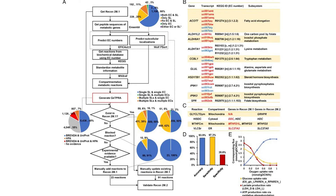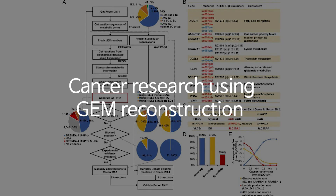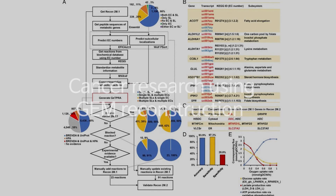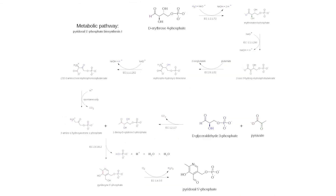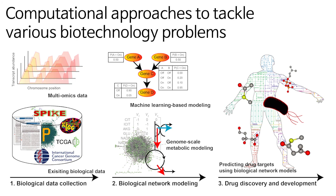The third topic is cancer research using GEM reconstruction. Using the transcriptome or proteome data of cancer cells, it is possible to make cancer cell-specific GEMs from generic GEMs. If we analyze this well, we can know important metabolic pathways and proteins in cancer, which can direct us to the development of effective anti-cancer drugs.